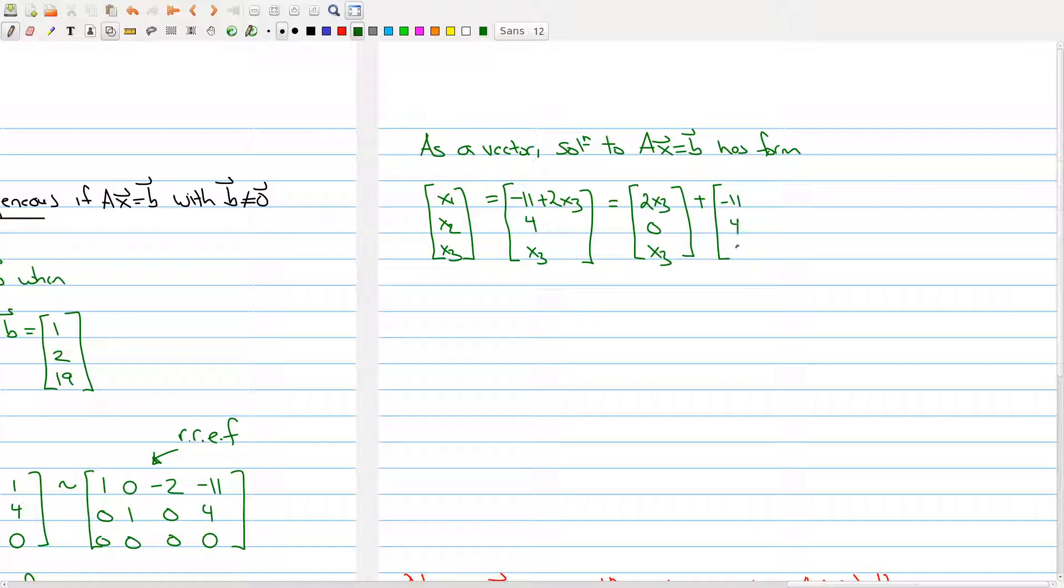I can rewrite this as plus -11, 4, and 0. There's no other number here except for the x3. Here we have the 2x3 - 11.